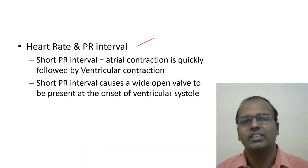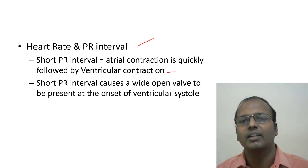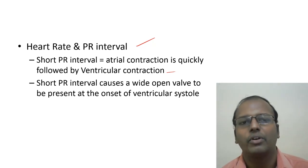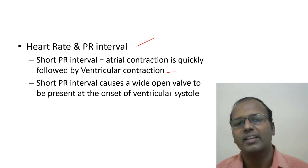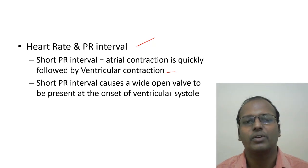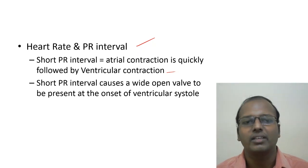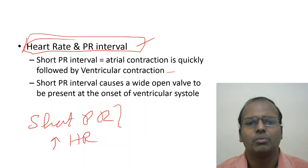Heart rate and PR interval are interrelated. Short PR interval means atrial contraction is quickly followed by ventricular contraction, so the valve is still widely open at systole onset — producing loud S1. Similarly, tachycardia provides less time between atrial and ventricular contraction. Both short PR interval and increasing heart rate cause increased S1 intensity.